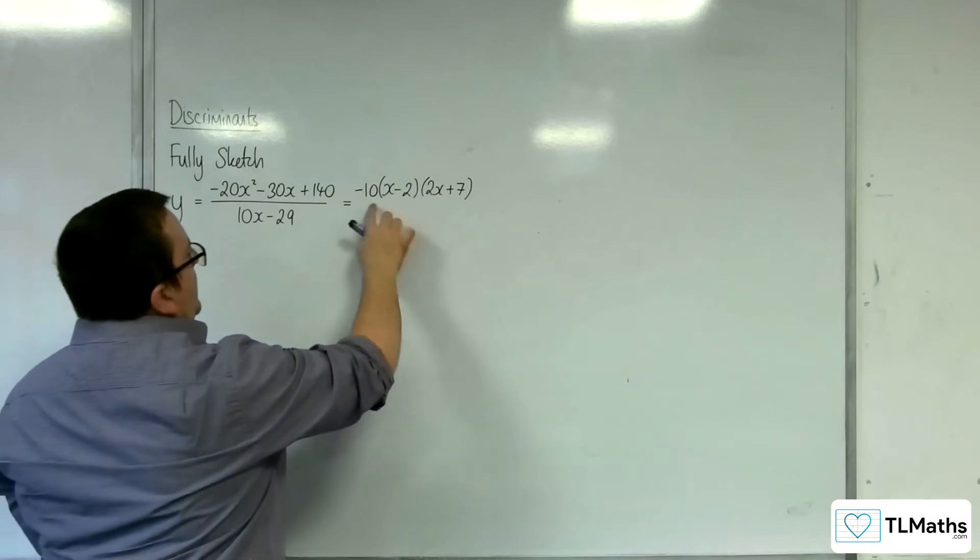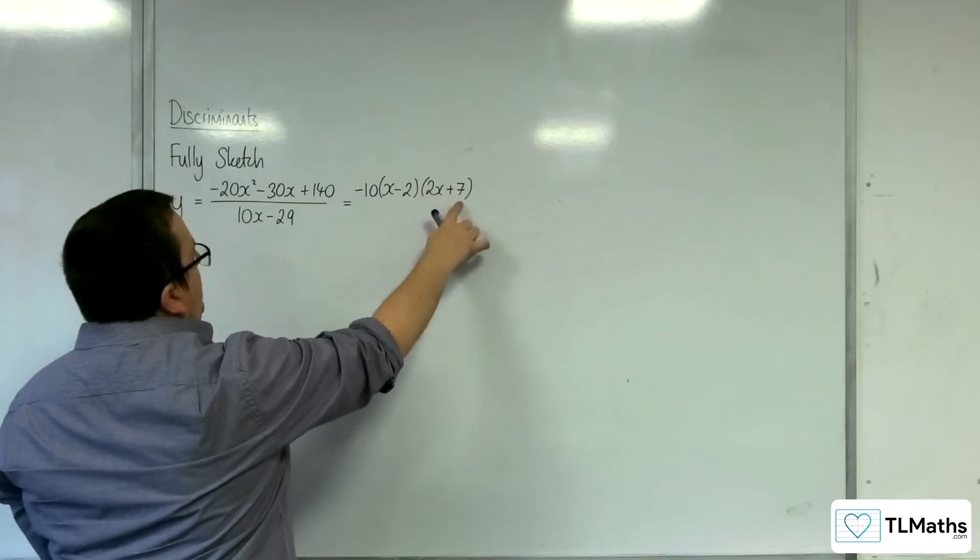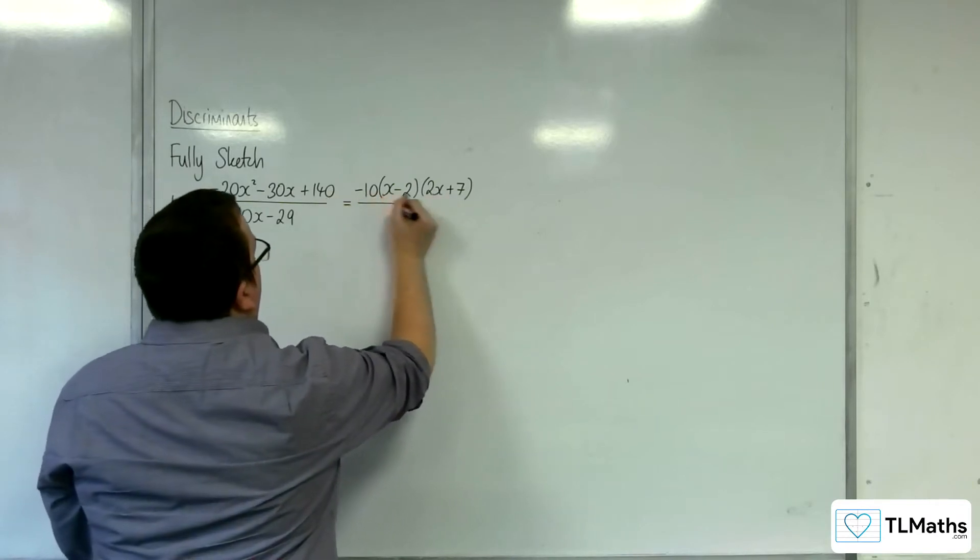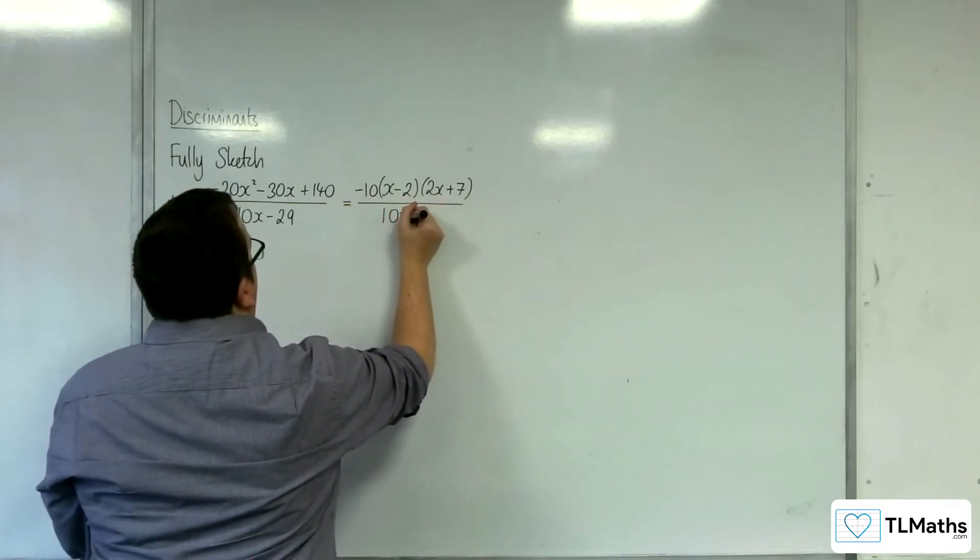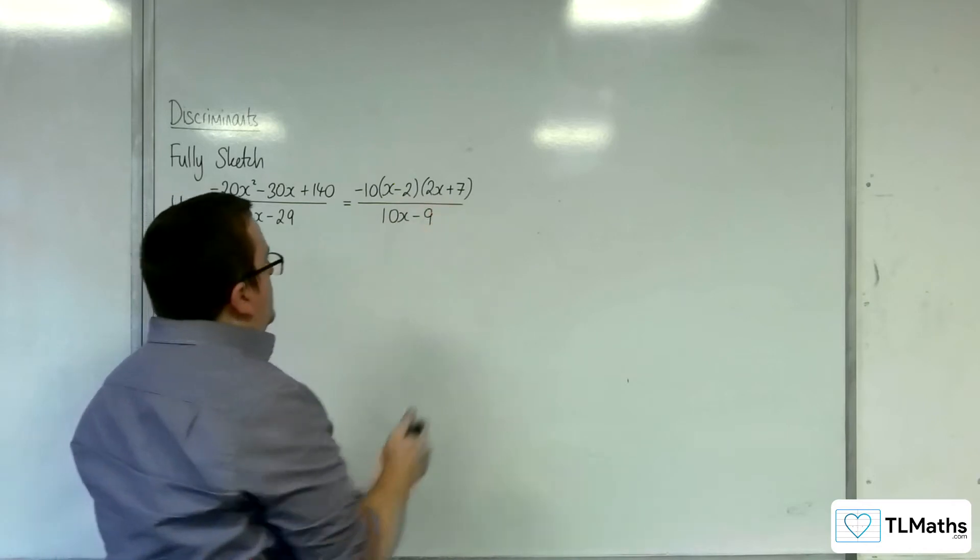On the outside, to get it fully factorized. Just to double check, we're going to get minus 10 times minus 2, so 20 times 7, which makes it 140. So yeah, that's all going to work out.